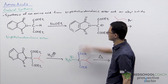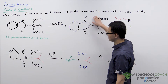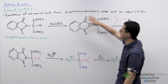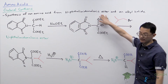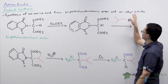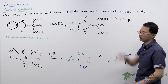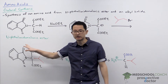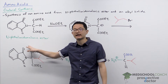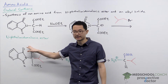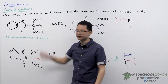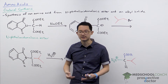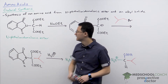The way Gabriel synthesis works is it makes an amino acid using N-phthalimido malonic ester and an alkyl halide. When you look at this compound you can actually see there are several features that look similar to an amino acid.